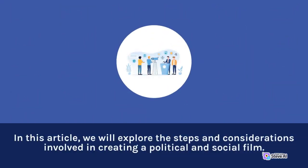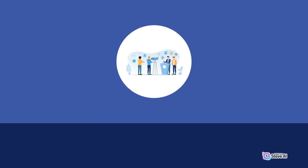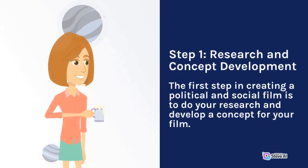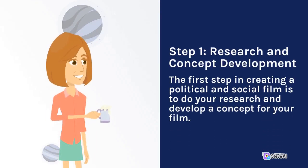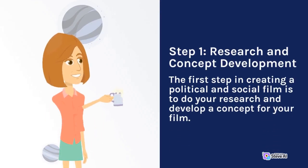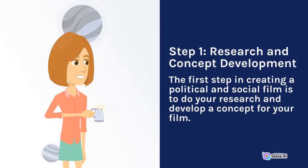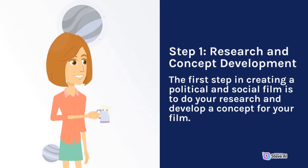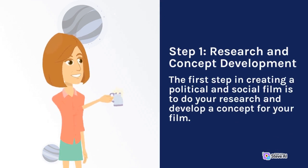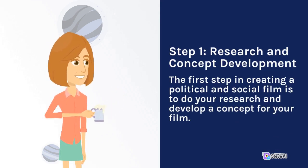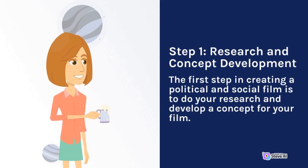In this article, we will explore the steps and considerations involved in creating a political and social film. Step 1: Research and Concept Development. The first step in creating a political and social film is to do your research and develop a concept for your film.